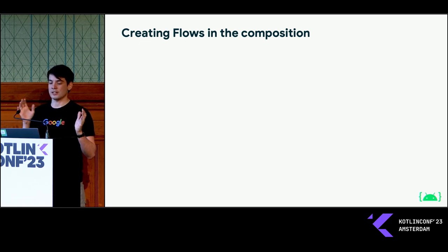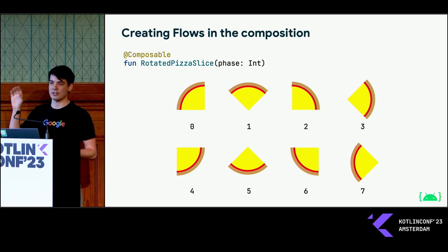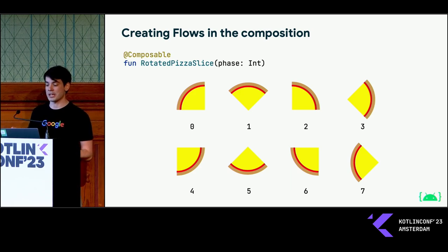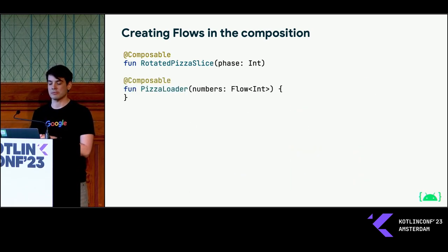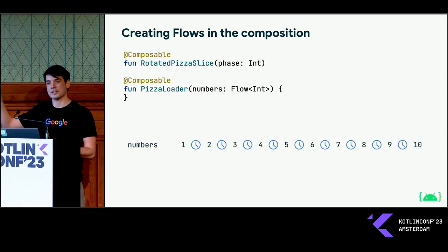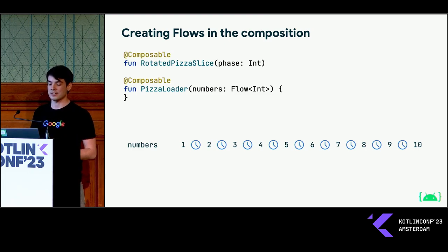That was the problem of creating coroutines inside a composition. Now let's talk about flows. For this example, we'll build a simple loading animation. I'll assume I already have a helper function implemented — a rotated pizza slice that takes a number between 0 and 7 and displays one of those animation phases. We'll create a pizzaLoader function which receives a flow of numbers as a parameter — a flow that produces incrementing numbers endlessly with delays, which we can use for animation.